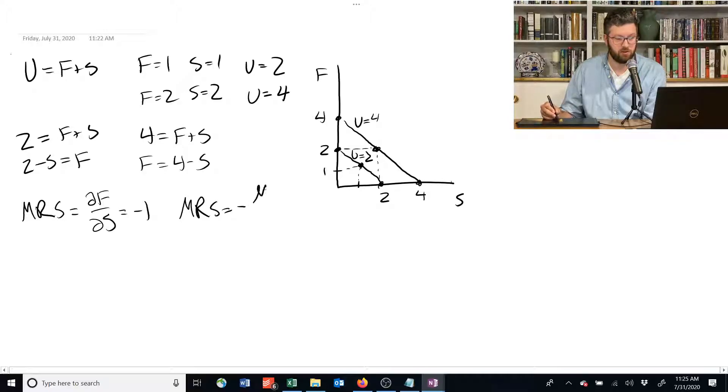Or we could use this other approach—it's the ratio of the marginal utility of shelter divided by the marginal utility of food. Going back to our original equation, the marginal utility of food is 1, because that's the derivative of this function with respect to f. The marginal utility of shelter is also 1. 1 over 1 with a negative in front is negative 1.